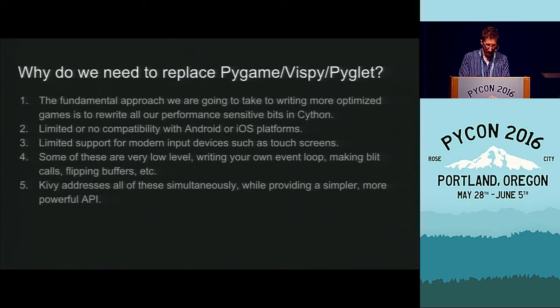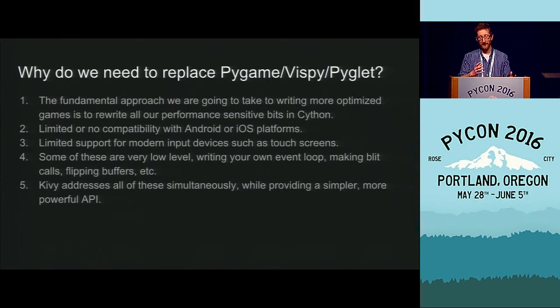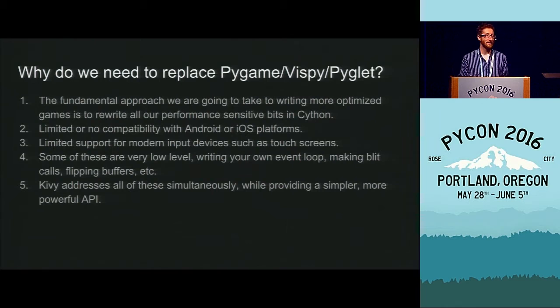In addition, some of these things require you to write your own event loop, make blit calls, and flip buffers. That means everybody ends up with spaghetti code where they've decided individually how to do all of these things for their unique project. I was hoping to come up with a way so we could share the same basic low-level event loops and buffer flipping, so we can share code more readily. The Kivi framework addresses all of these problems and provides a very powerful and simple API with cool features like replacements.